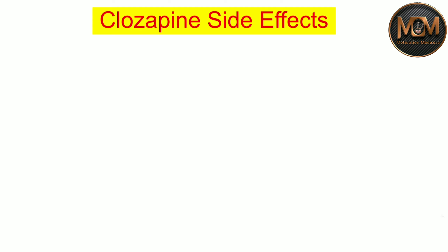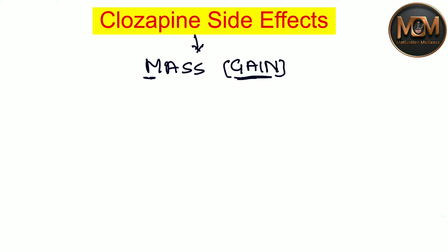So without wasting time, let's get started. We have a mnemonic to learn the side effects of Clozapine, that is 'MASS GAIN.' We are going to take every single letter from the word 'MASS,' and the full word 'GAIN.' So I'm just going to write it out: M-A-S-S.